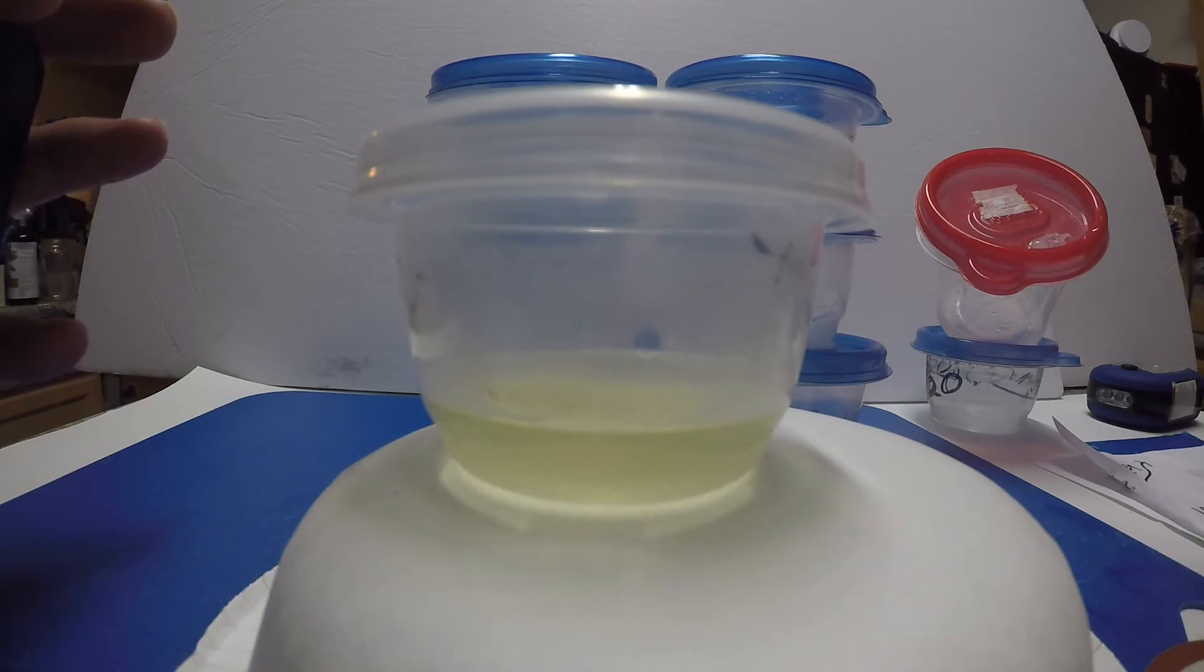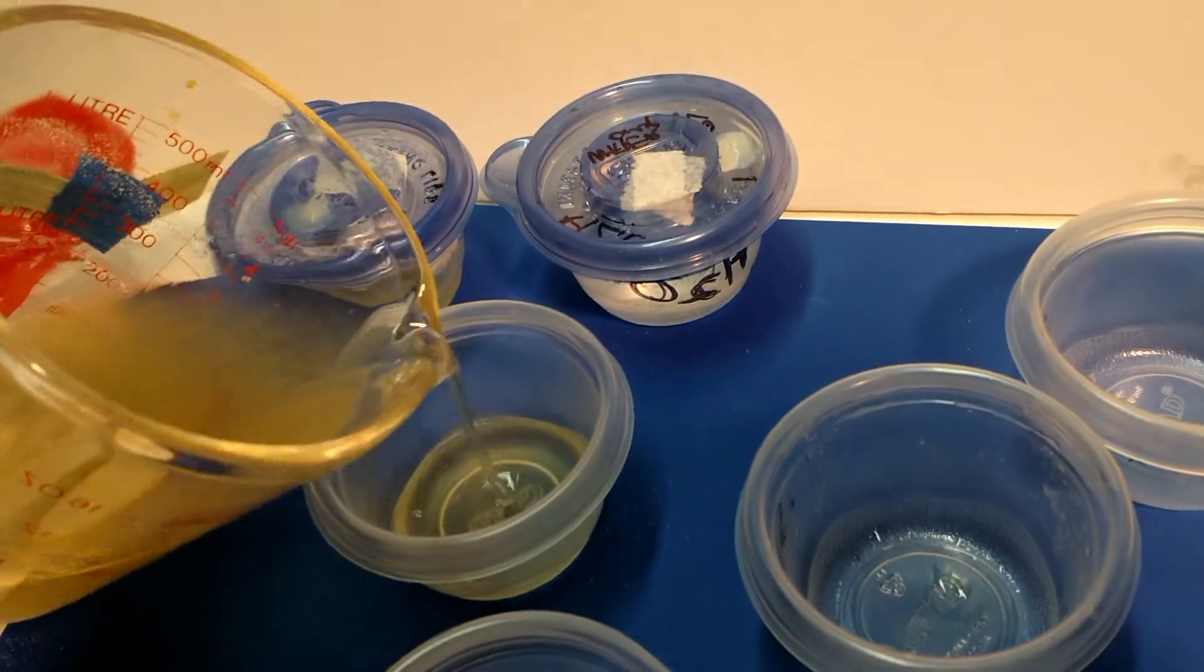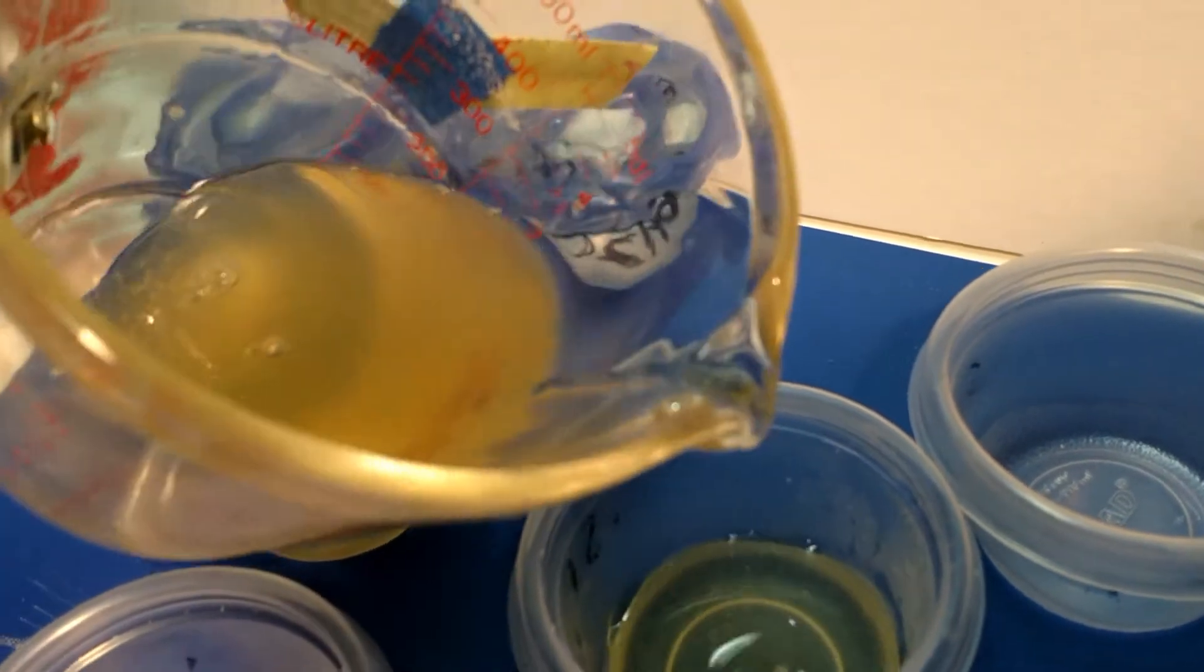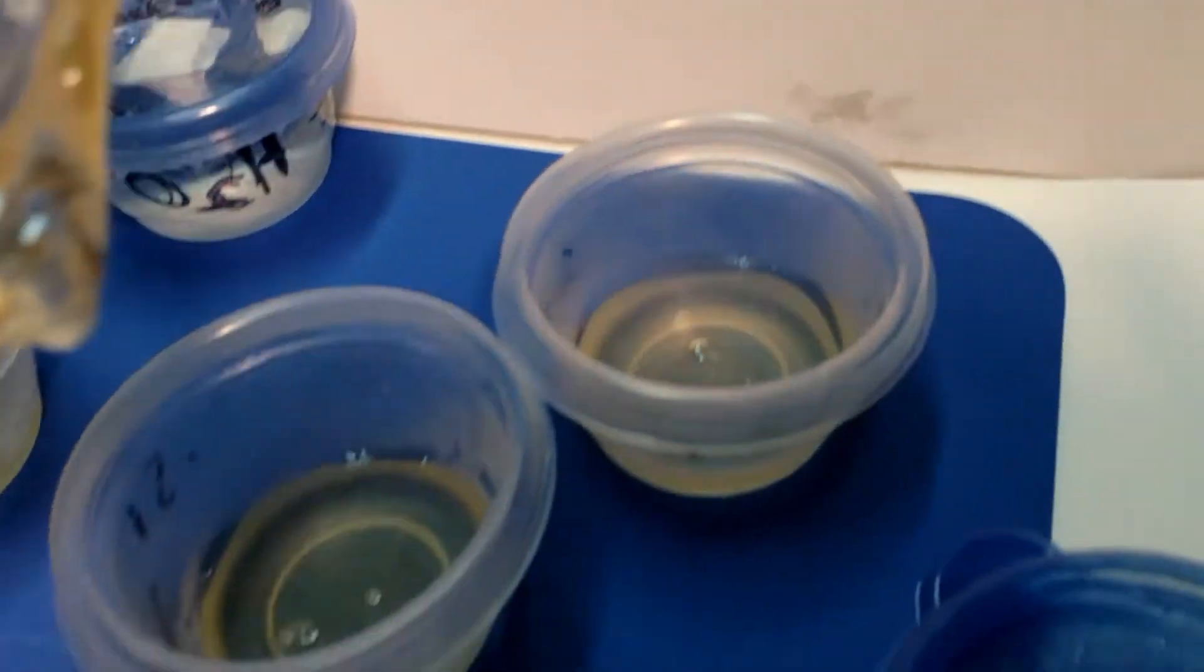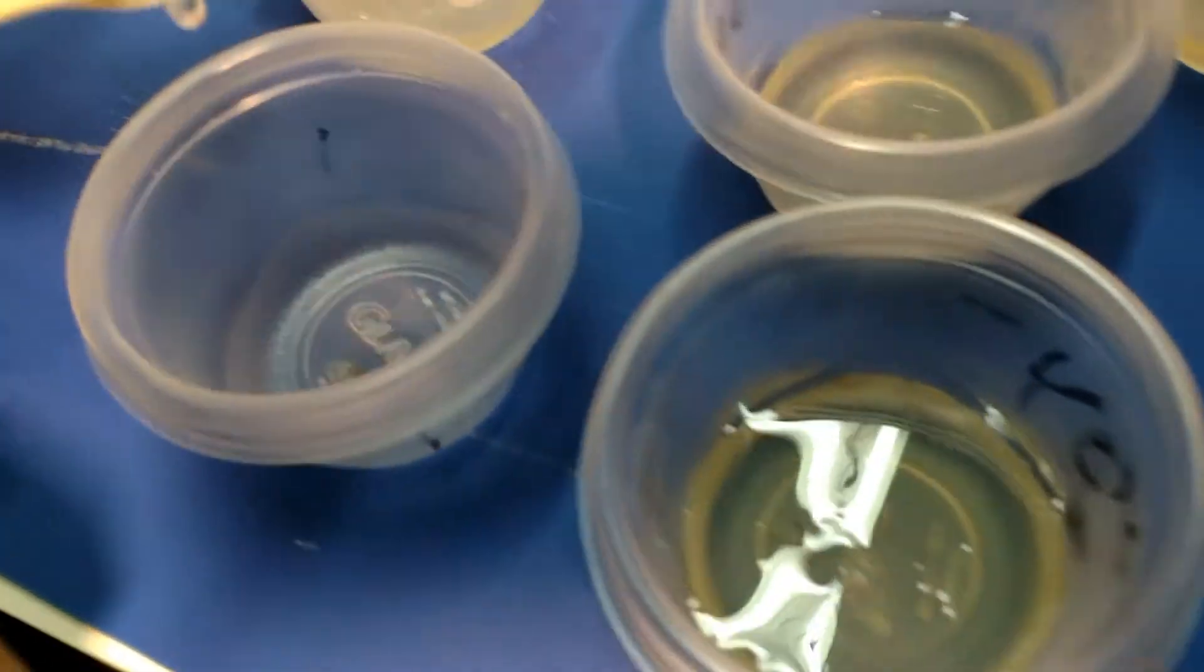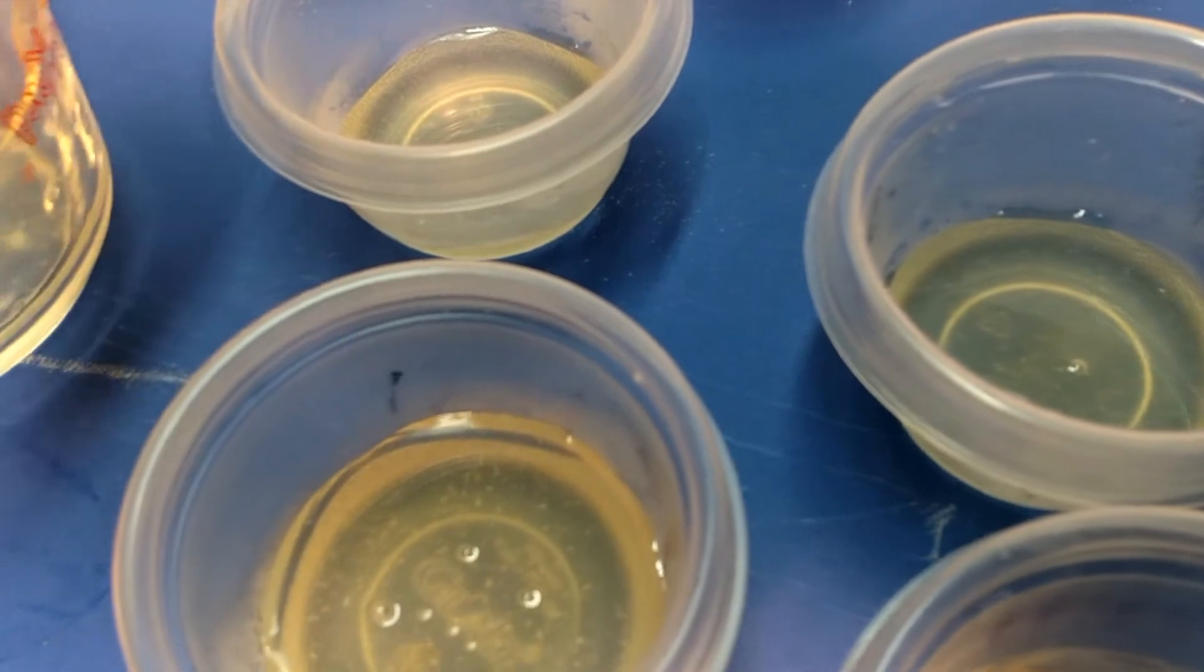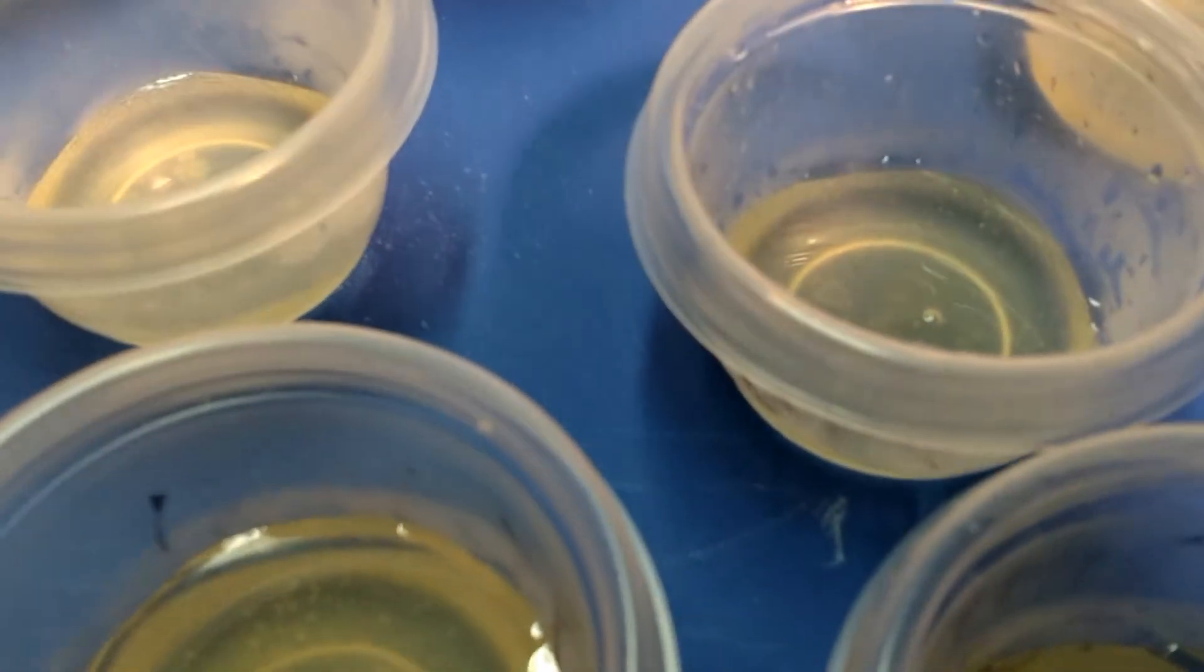It's all temperature-sensitive, so you have to pour the agar before it hardens up. If it cools off too much, it'll harden up and then you have to reheat it. Not a big deal with these pasty plates—that's one of the reasons they're so forgiving. But if you were pouring regular petri dishes, that would really suck because you'd lose your sanitary conditions. We don't need it in this instance because we're going to pressure cook it again.